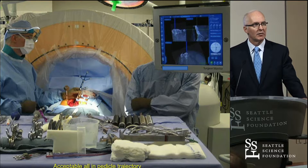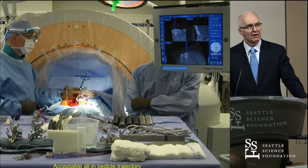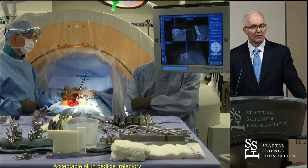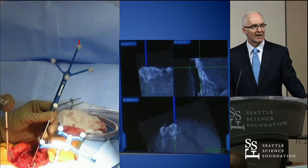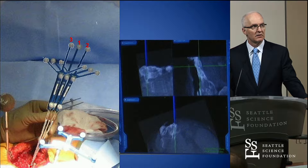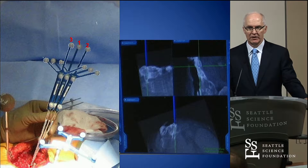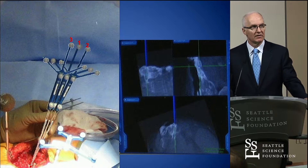This is the point I want to make. Here's a case of someone who had been fused with a Harrington rod, then Luque instrumentation, fusion mass, flat back syndrome, and needed an osteotomy. This is a perfect screw trajectory through the fusion mass at L1. This is out medial; this is out lateral. So that's the tolerance window you have for placing screws in these kinds of cases.